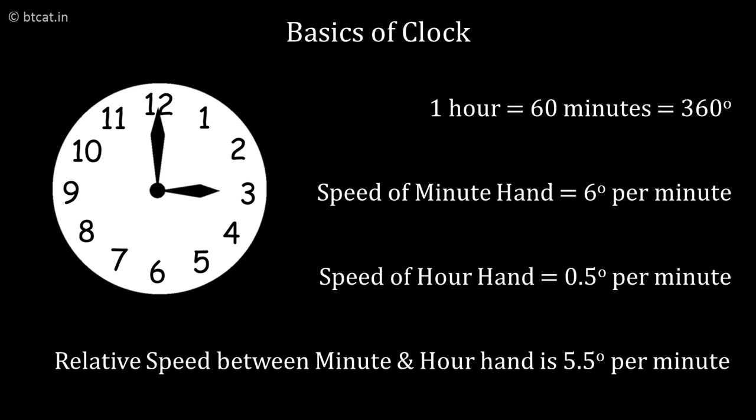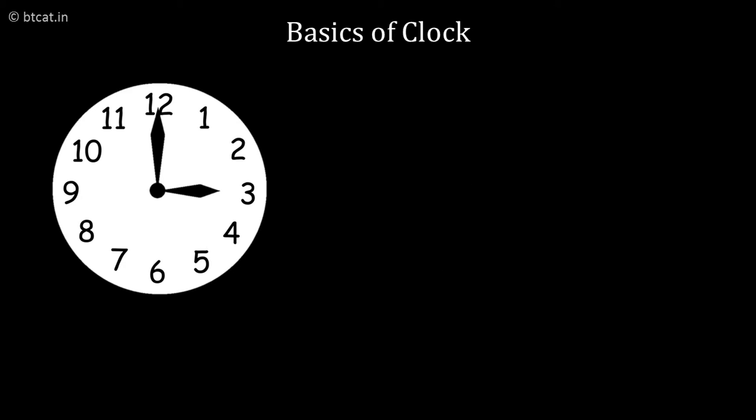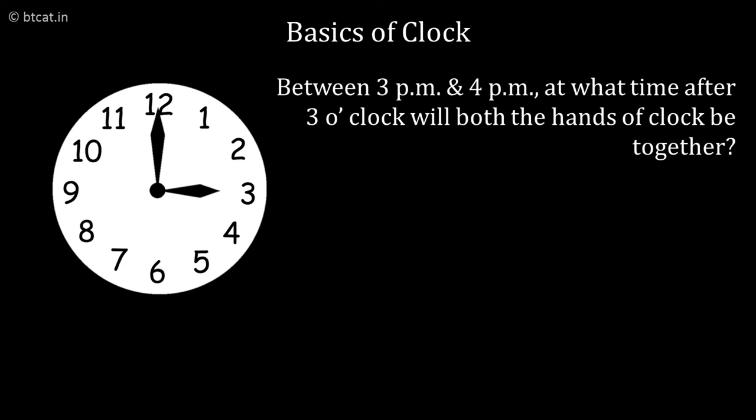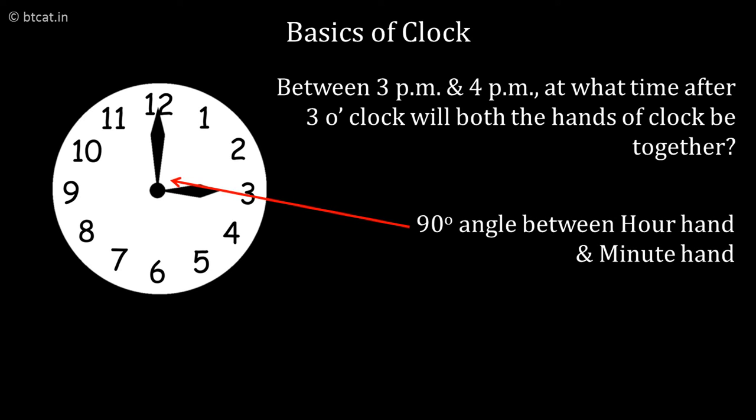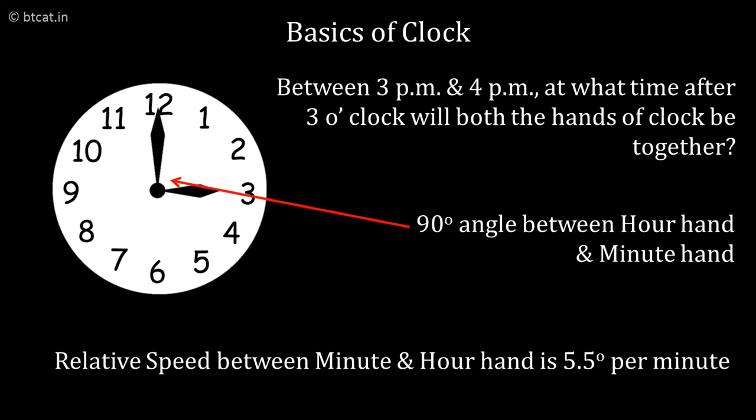Now let's say the question is: between 3 pm and 4 pm, at what time after 3 o'clock will the hands of the clock meet each other? This question is a beautiful application of relative speed. What you need to consider is that at exactly 3 pm there is a 90 degree angle between them. Now the minute hand has started to move in the direction to meet the hour hand, which is stationary for example. In other words, the minute hand is coming at the speed of 5.5 degrees per minute, and therefore it will take 90 divided by 5.5 minutes to meet the hour hand. Amazing application.